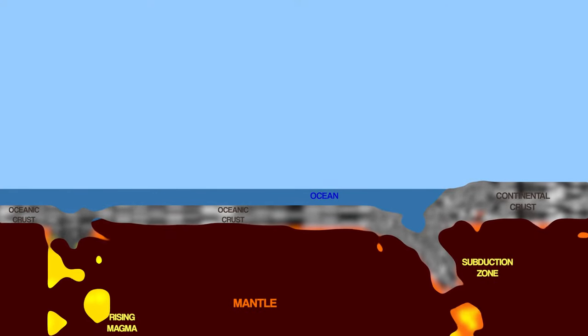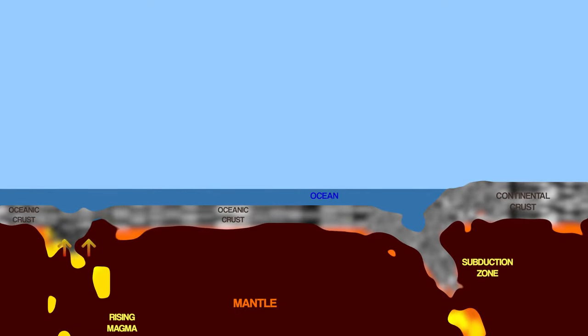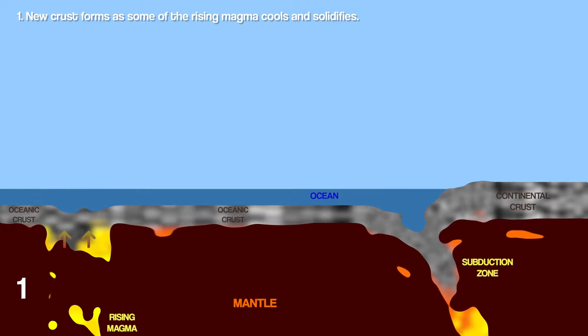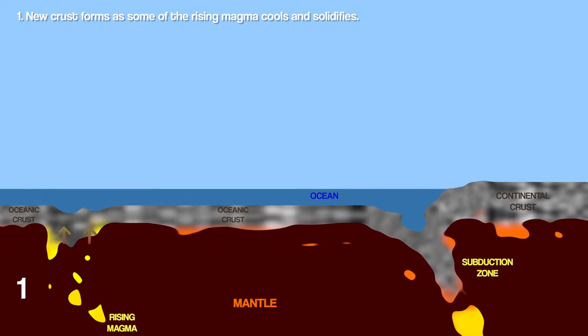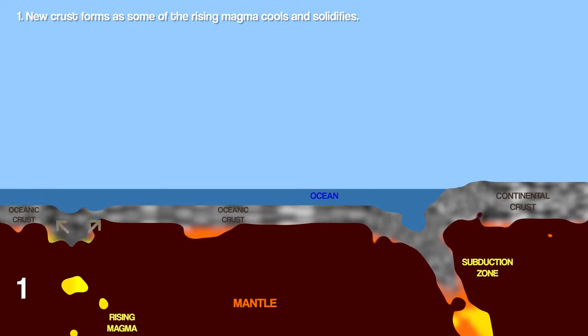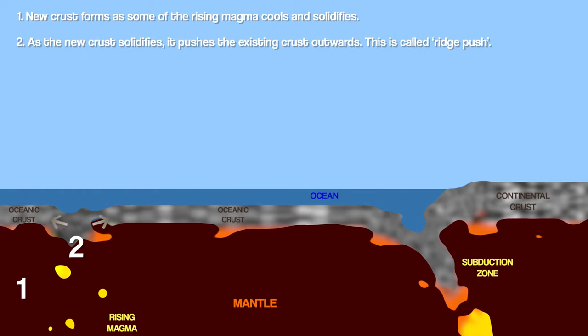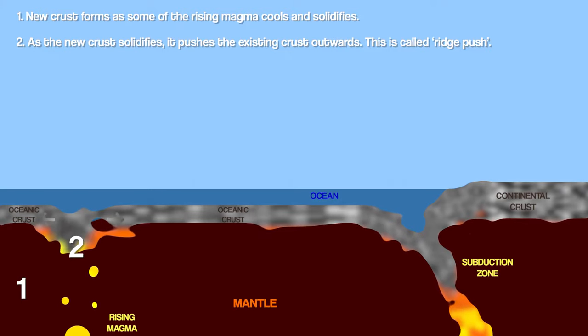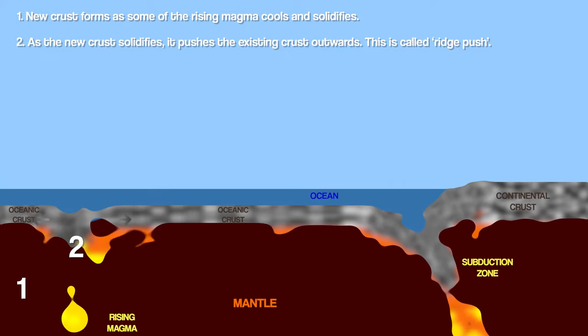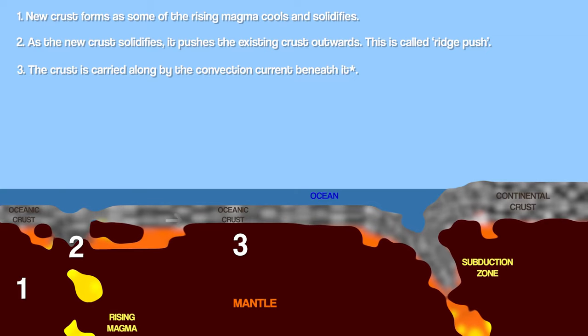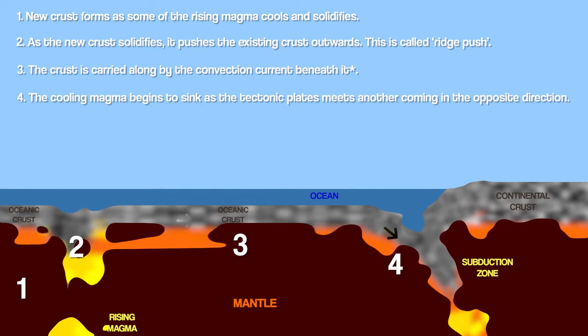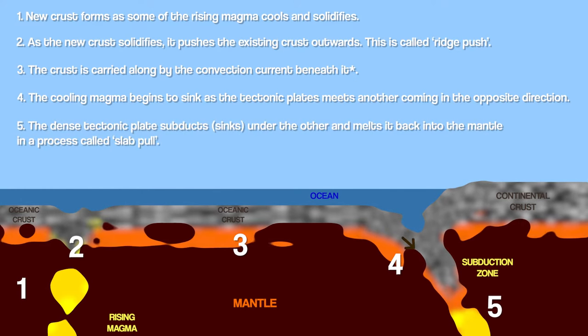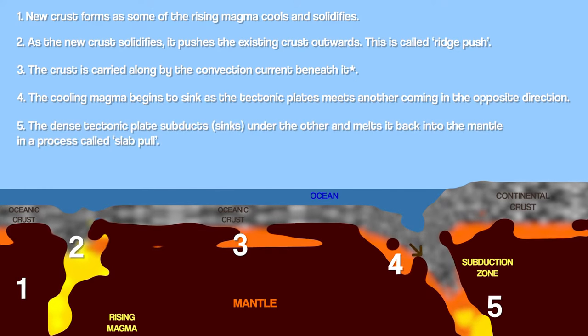In the places where the magma has reached the surface, new crust is formed, as some of the magma has cooled down enough to solidify. As the new crust pushes up, it forces the existing crust outwards, which starts to make it move. We call this ridge push. From there, the crust is carried along by the convection currents beneath it, until it is old and dense enough to sink back down into the planet, dragging the crust into the mantle in a process called slab pull.